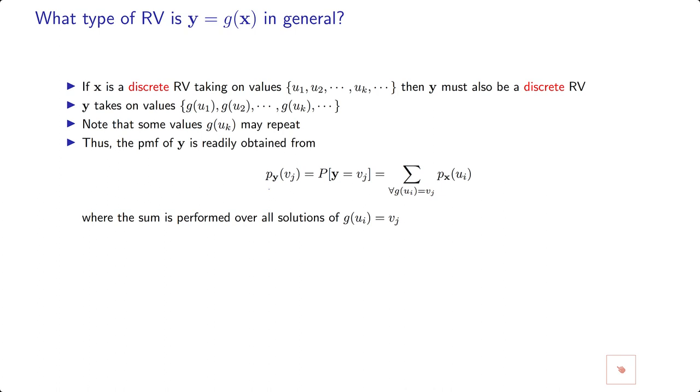The probability mass function of Vj is equal to the probability that Y equals Vj. You have to find the set of solutions where G(Ui) equals Vj and add their probability mass functions.